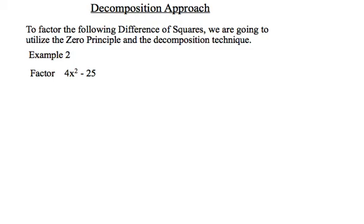Second example for decomposition approach: 4x squared minus 25. Again it's a binomial or only has two terms, so I want to make it into a trinomial without changing its value. So I introduce the 0x term.